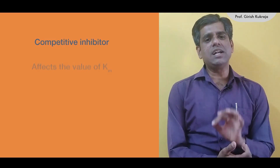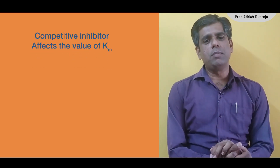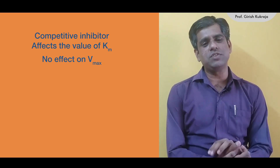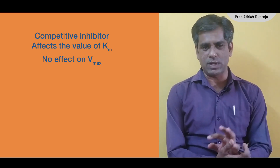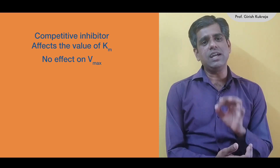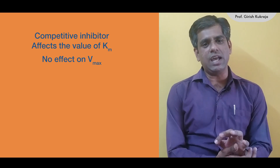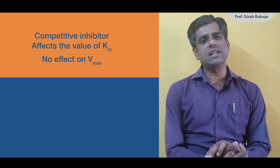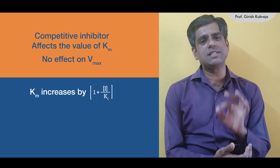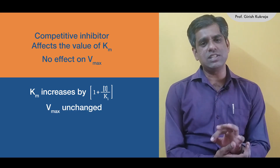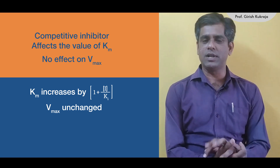Another feature of this inhibitor is that it affects the value of Km but apparently has no effect on the value of Vmax of the enzyme-catalyzed reaction. A typical competitive inhibitor causes an increase in the value of Km by a factor of (1 + I/Ki), whereas the value of Vmax remains unchanged.